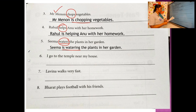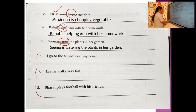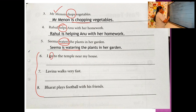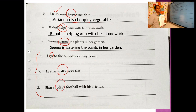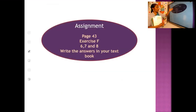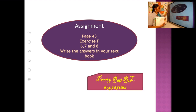Teacher is going to stop here. The remaining three sentences you have to write on your own: 'I go to the temple near my house' — verb: go; 'Laveena walks very fast' — verb: walks; 'Bharat plays football with his friend' — verb: plays. Change these into present continuous tense and write the answers in the space provided. This is your assignment — page number 43, exercise F, sentences 6, 7, and 8.